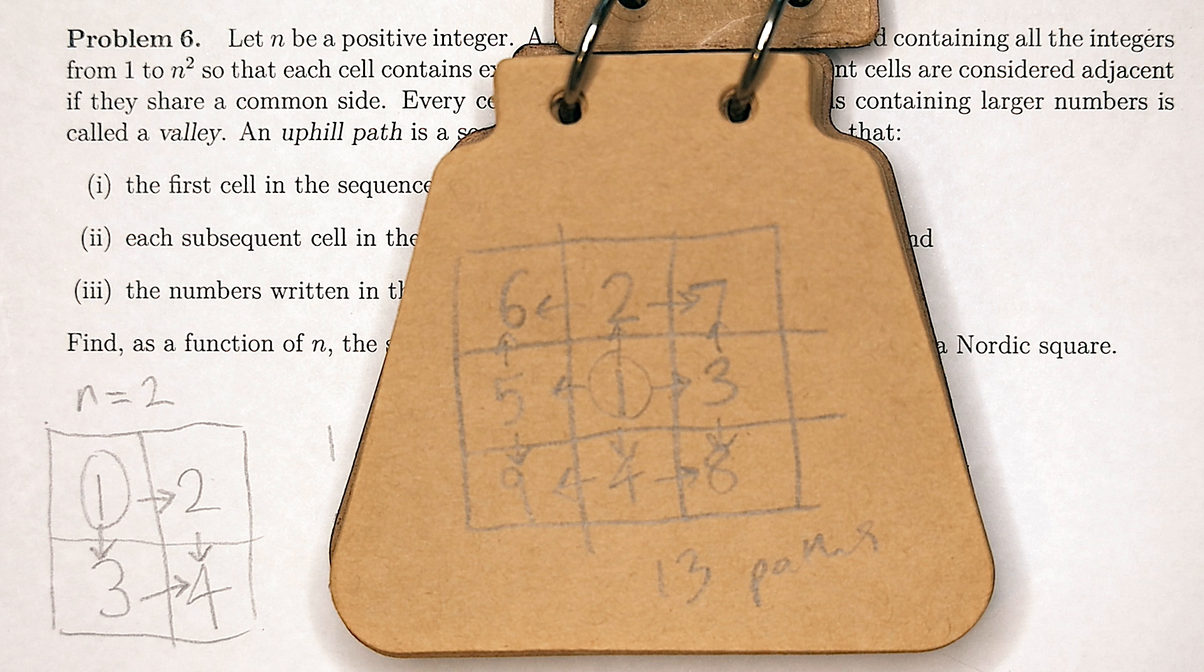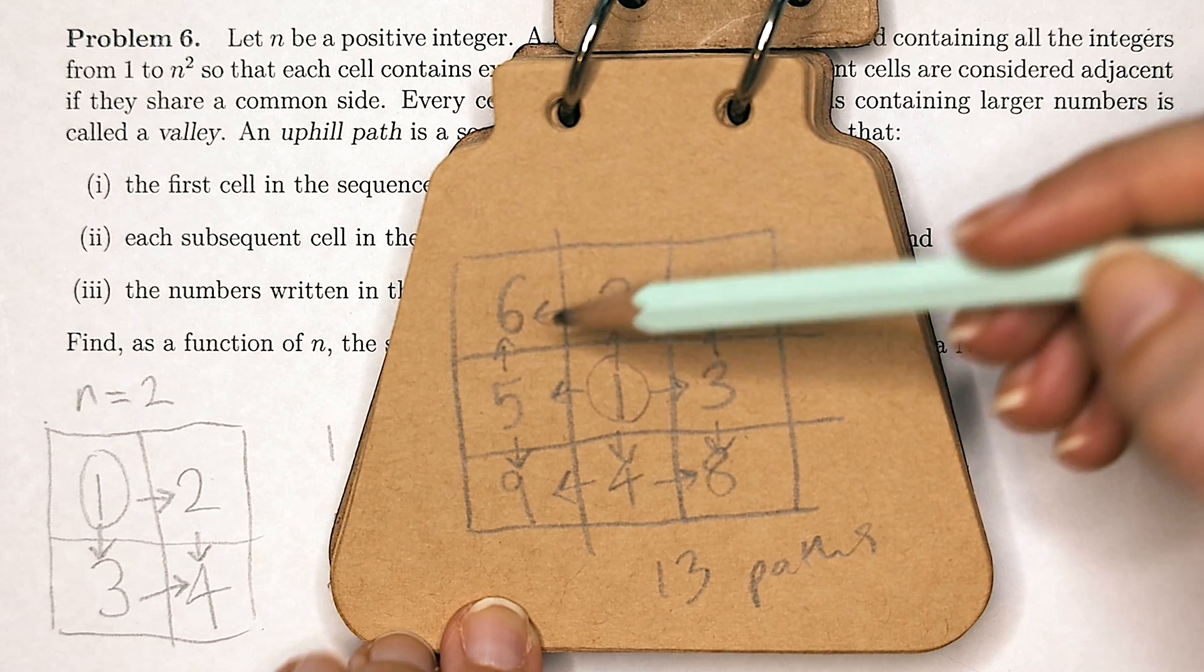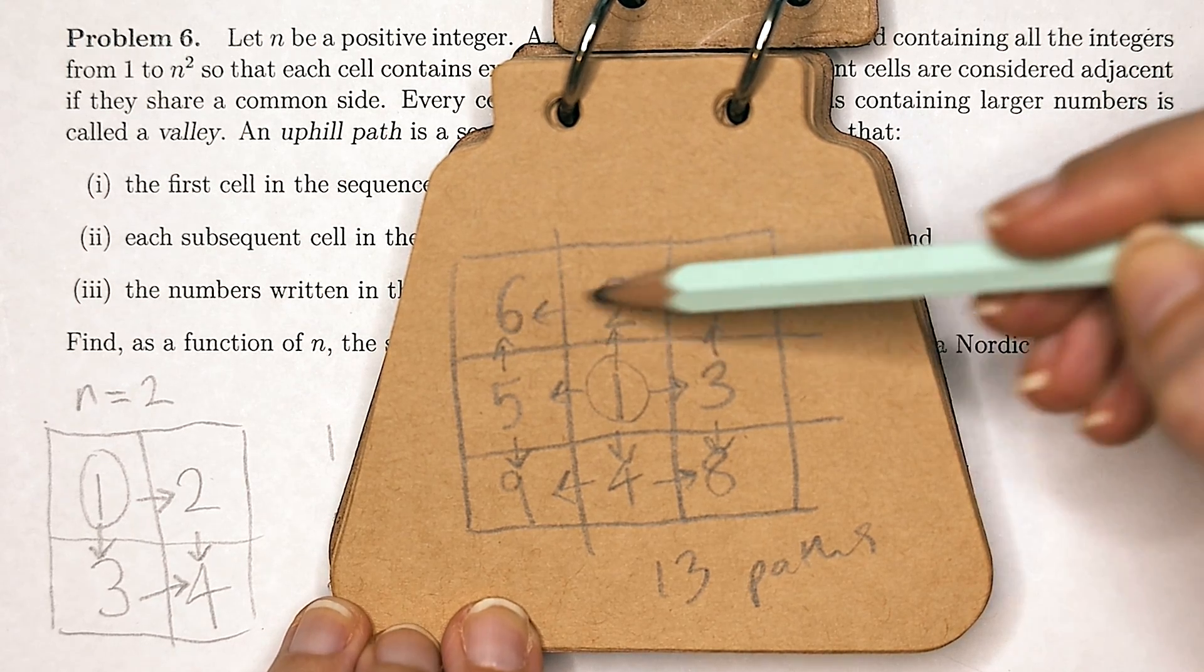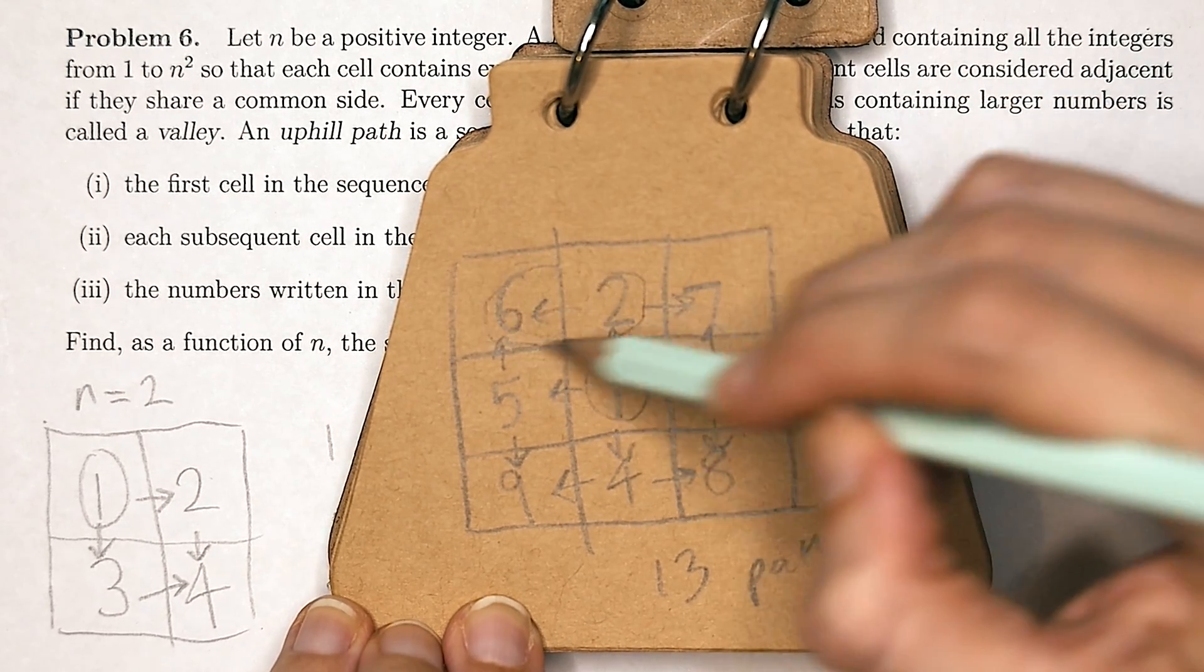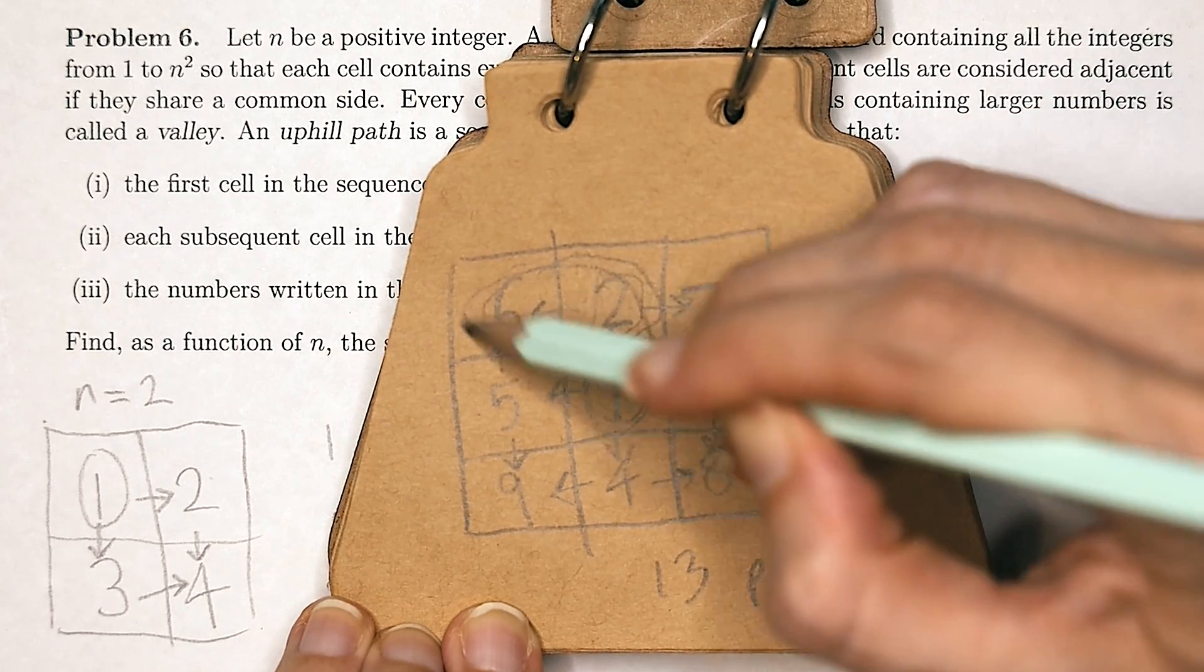And you also need to recognize that for every pair of adjacent numbers, there needs to be only one path back to the valley. Say here, 2 and 6 are adjacent numbers, and from them there was only one path back down to our valley, which was like this.